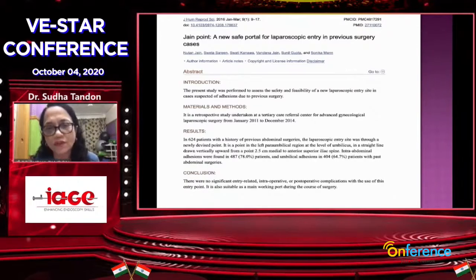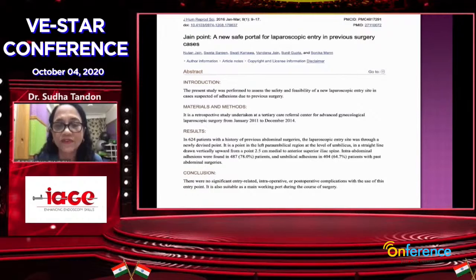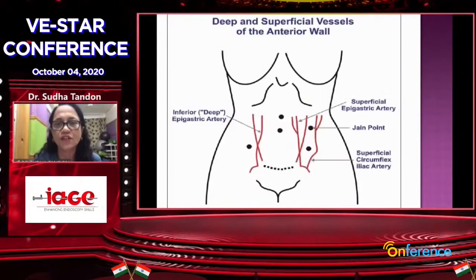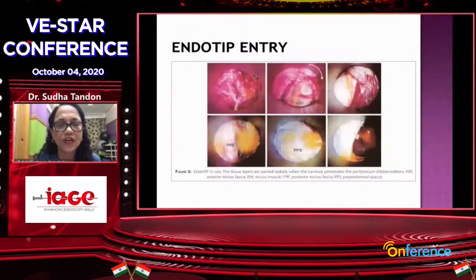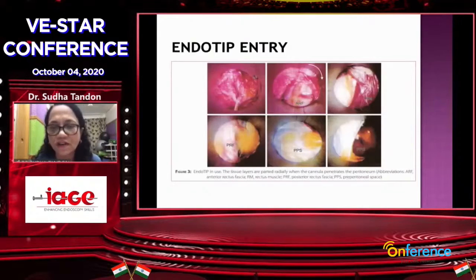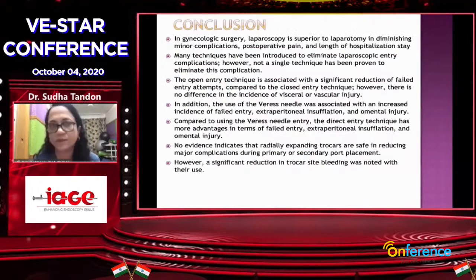The Jain point is another point described by Dr. Nutan Jain. This point is in the left paraumbilical region at the level of the umbilicus, in a straight line drawn vertically upwards from a point 2.5 centimeters medial to the anterior superior iliac spine. She has found it to be a very safe laparoscopic port entry point. The Endotip requires that you be very familiar with all the layers you're going through, and even when you come out, you must identify all layers of the abdomen.